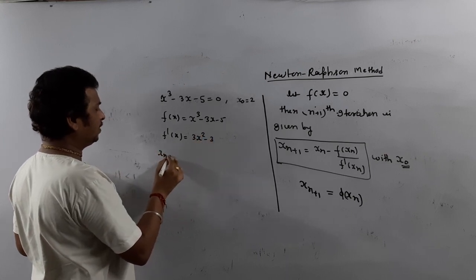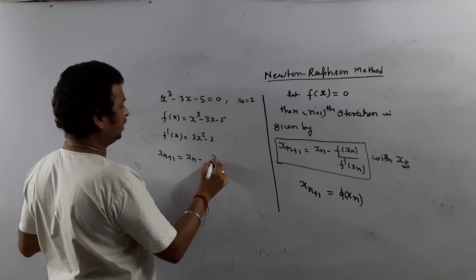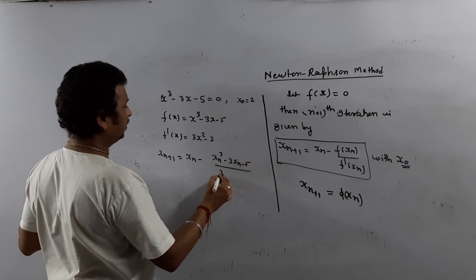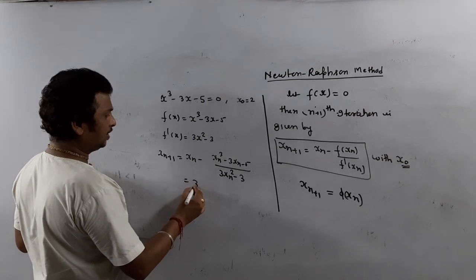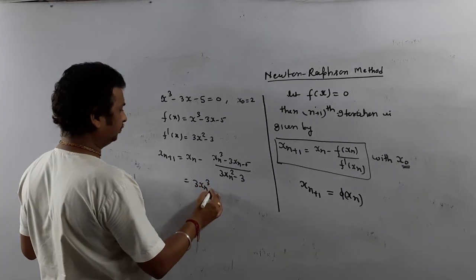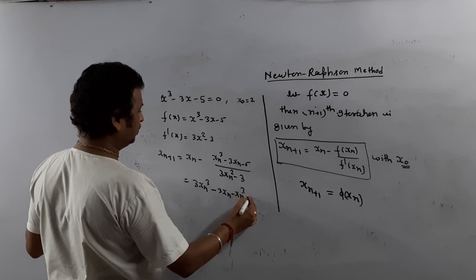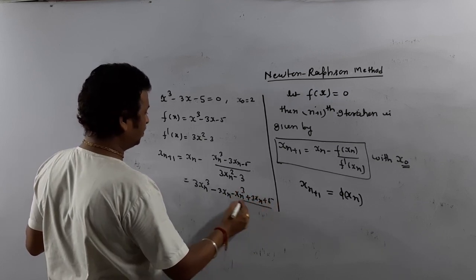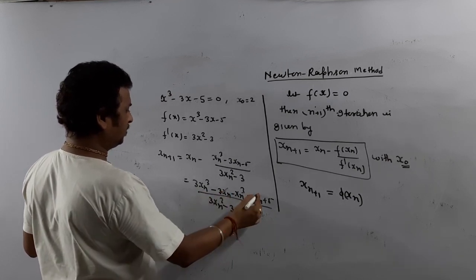So what is x_{n+1}? It is x_n minus f(x_n), meaning x_n³ minus 3x_n minus 5 upon 3x_n² minus 3. Just simplify.